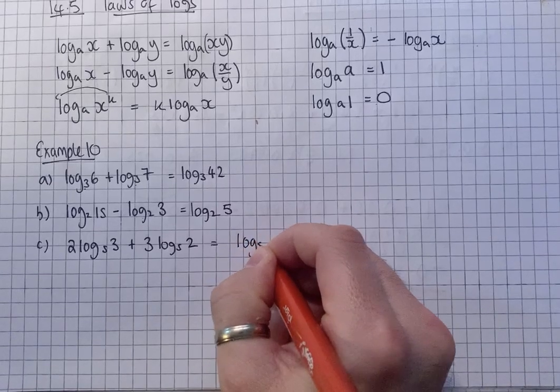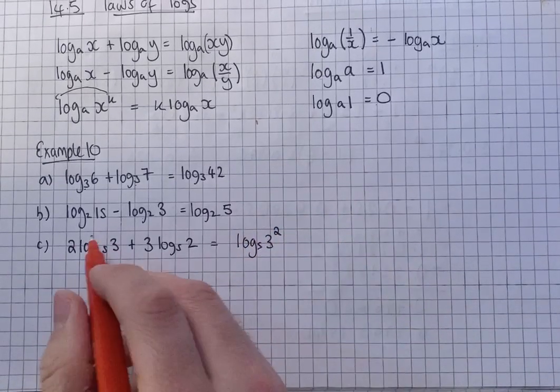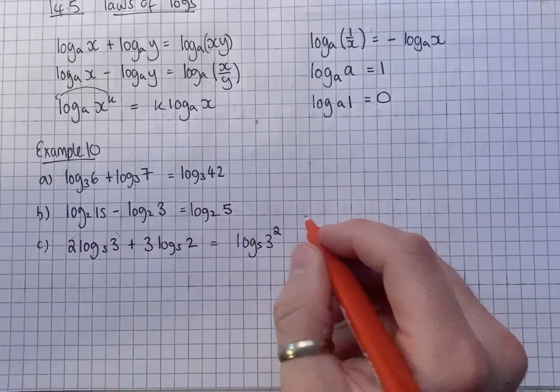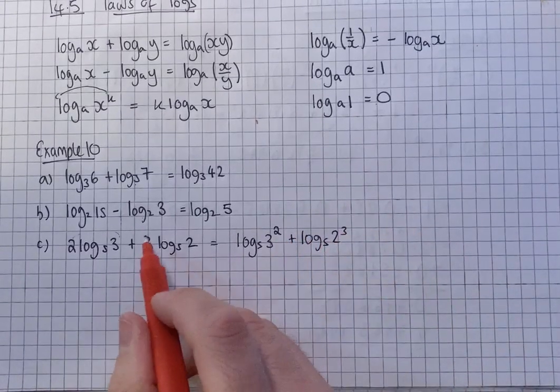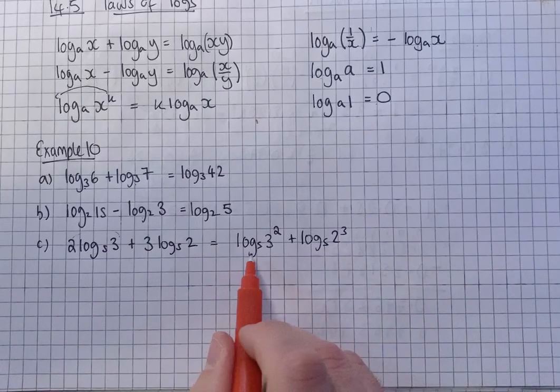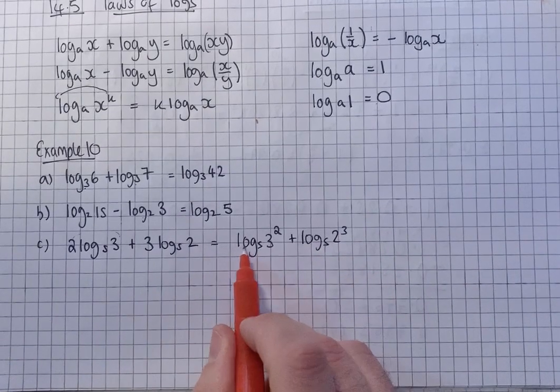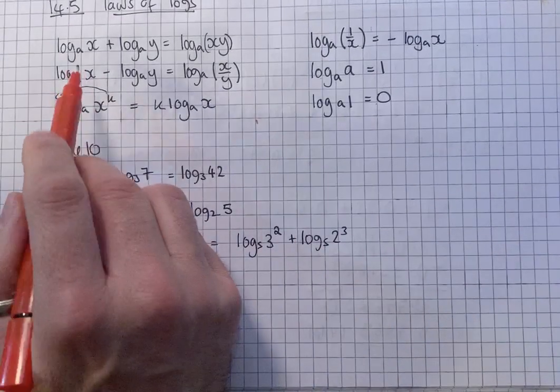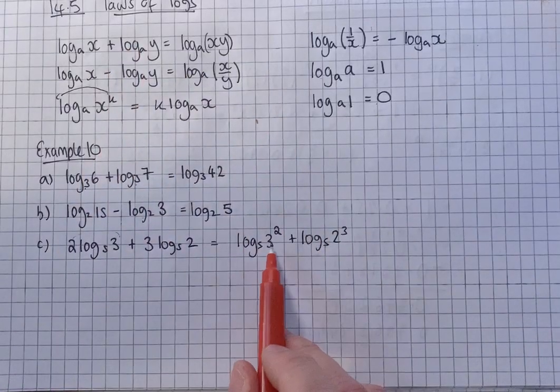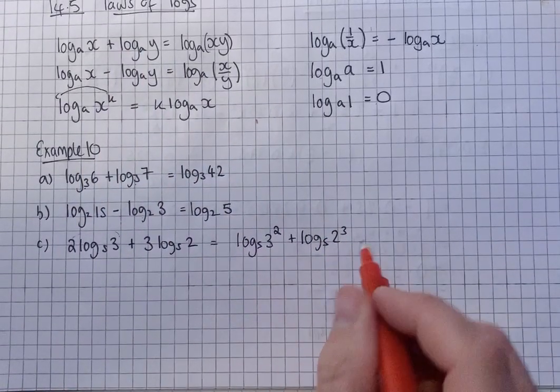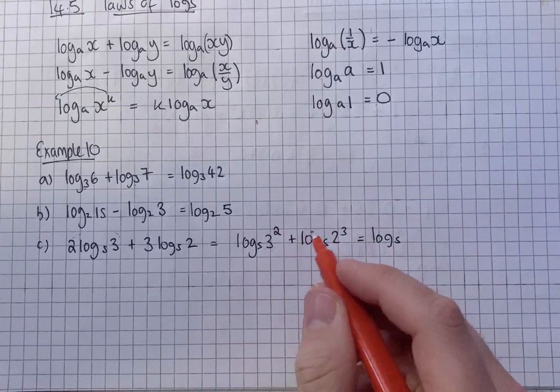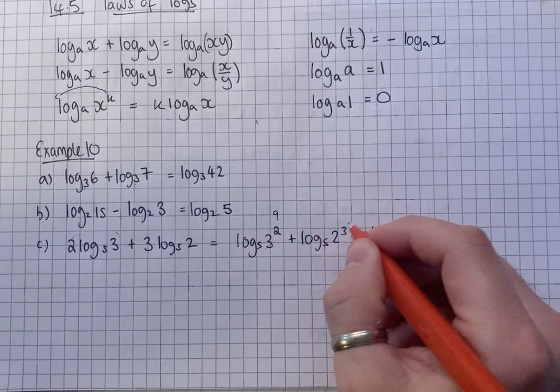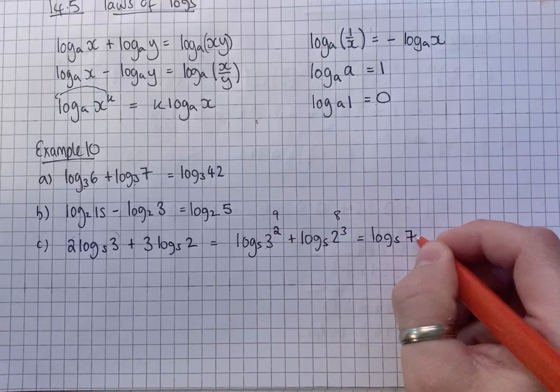So that's the same as log to the base 5 of 3 squared. Just bring the 2 up as a power. Plus, log to the base 5 of 2 cubed. Again, bring the 3 up as a power. And now, because they both start log to the base 5, log to the base 5, you can use the multiplication rule. When you add, just times these together. So it's going to be 3 squared, which is 9, 2 cubed, which is 8. 9 times 8 is 72.